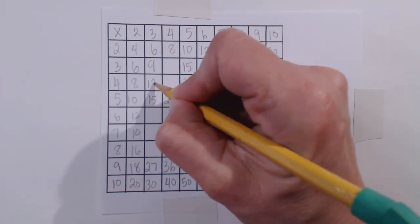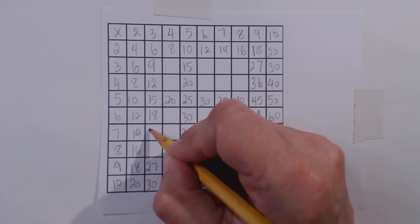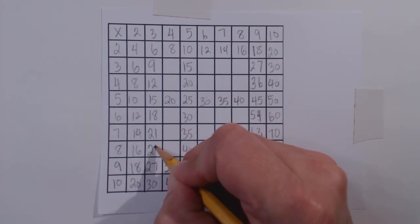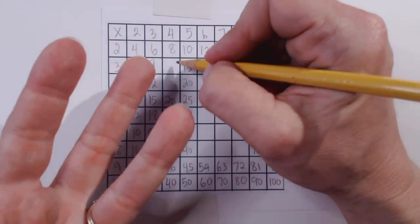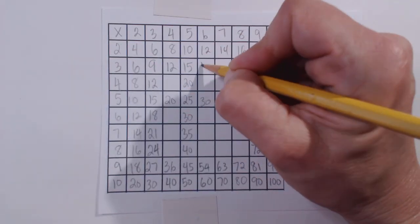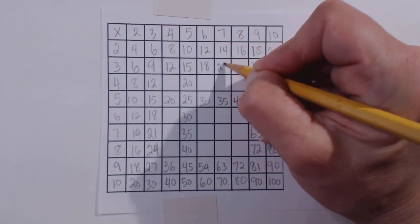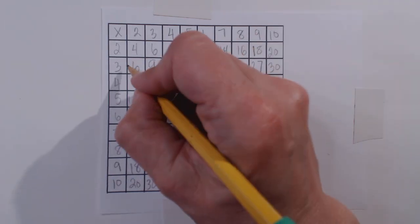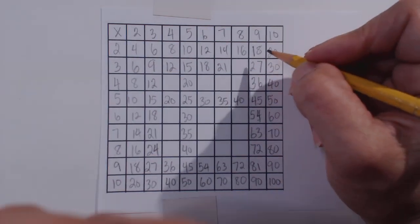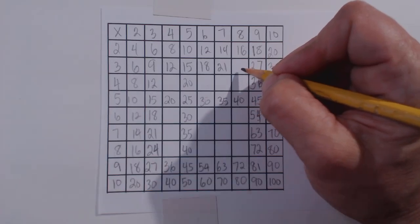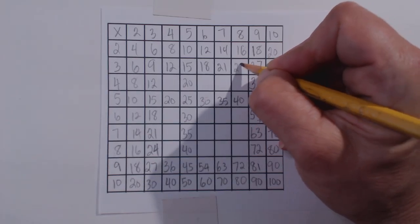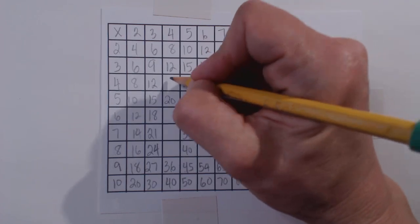What I have found is that with repeated practice with this method, even if they are having to add on at this point, they will eventually have them memorized and be able to fill them in without the adding on. They'll be able to skip count by the threes and the fours and the sevens.